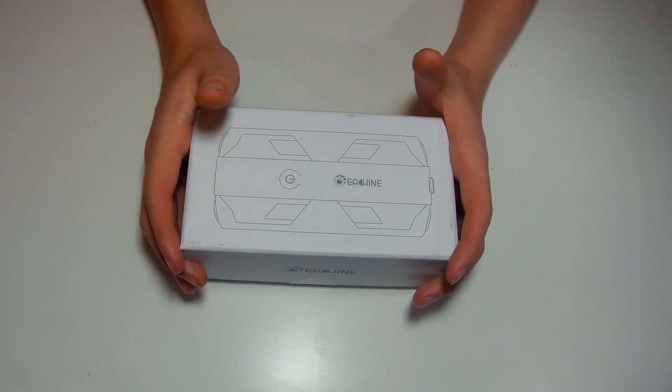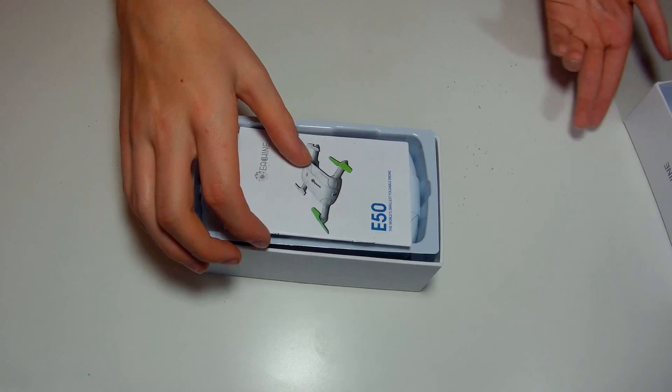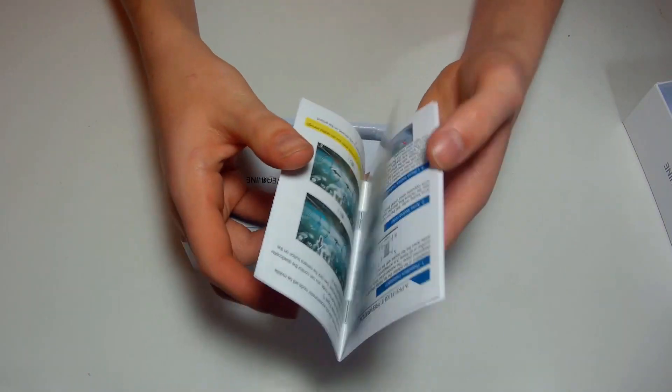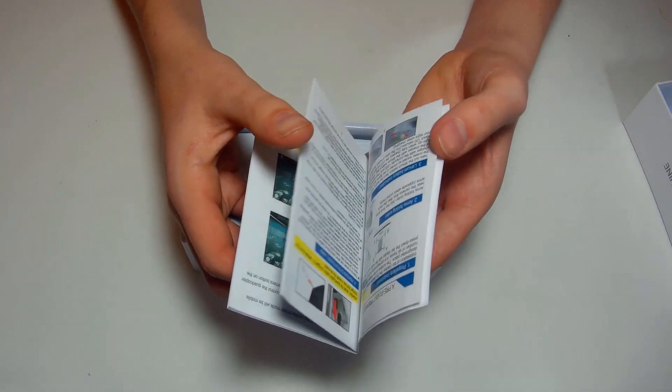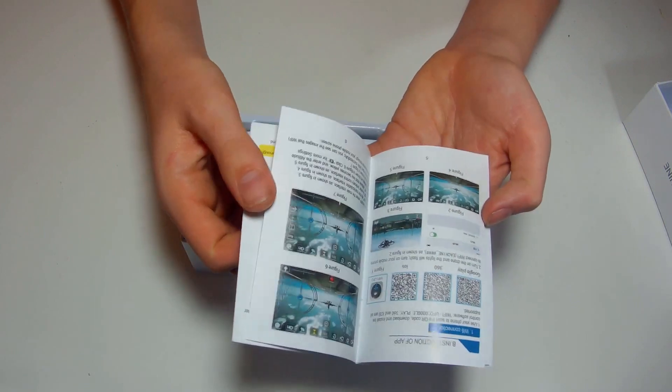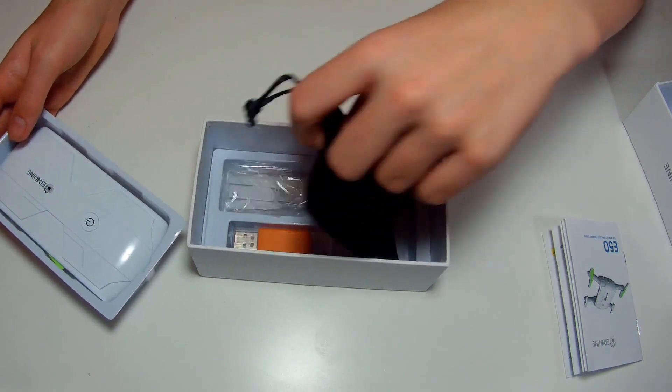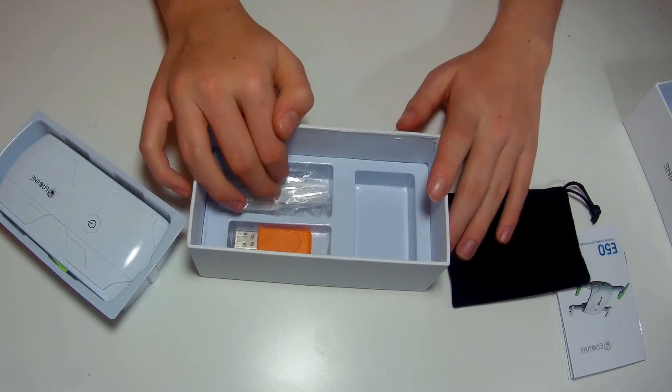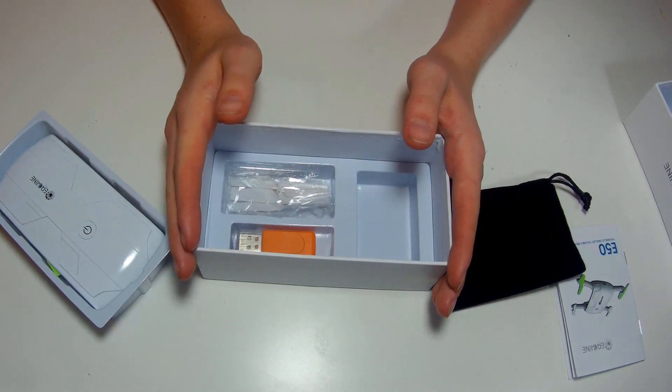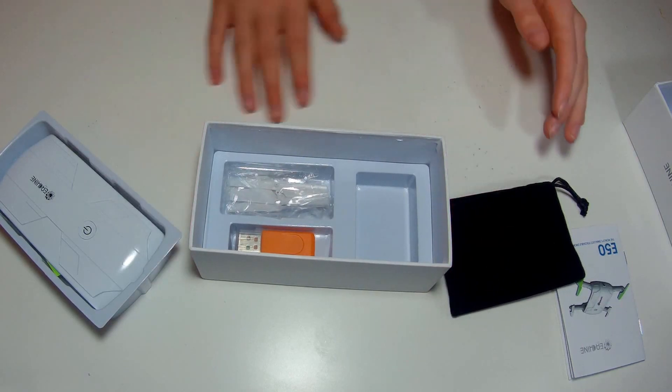In the box you're going to see the manual which is printed in color and it's rather good about how to connect to the app and how the app works. Then the drone itself, a carry case, a USB, and some props. So let's get this laid out on the table and I'll talk to you in further detail.